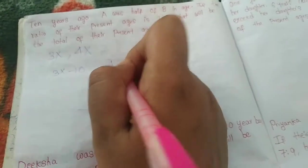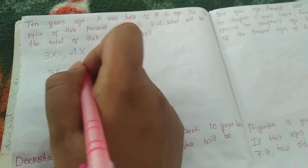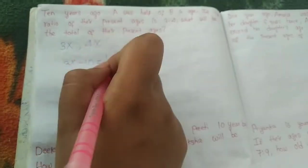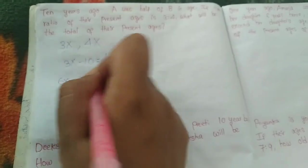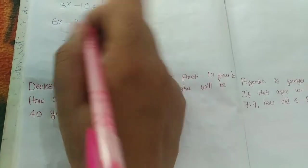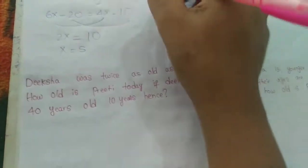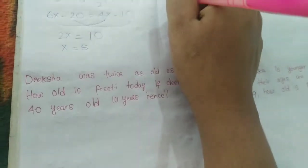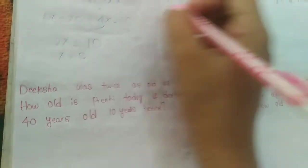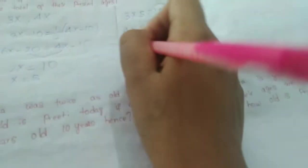Ten years ago, A was half of B in age, which means 3x minus 10 equals half of (4x minus 10). Solving: 6x minus 20 equals 4x minus 10, so 2x equals 10, meaning x equals 5. Therefore A is 3 times 5 equals 15, and B is 4 times 5 equals 20. The total of their present ages is 15 plus 20 equals 35. This is our answer.